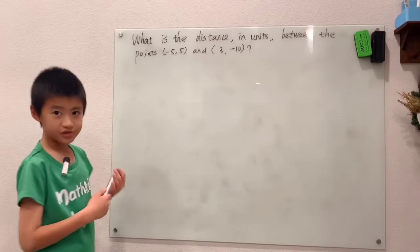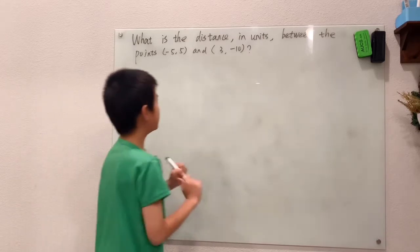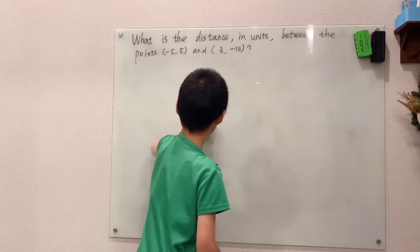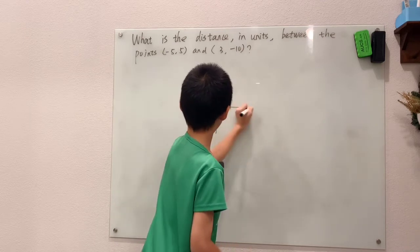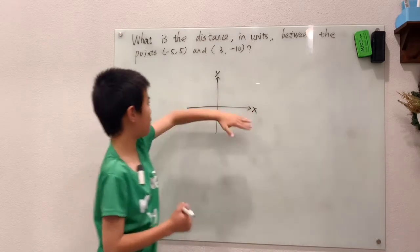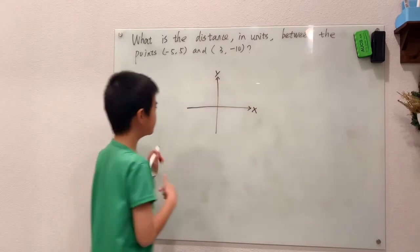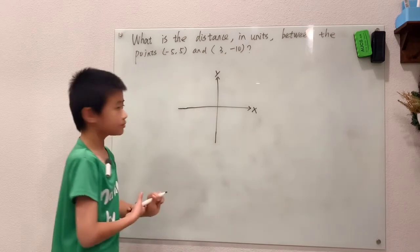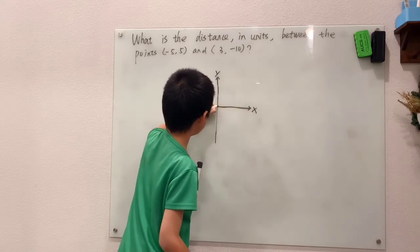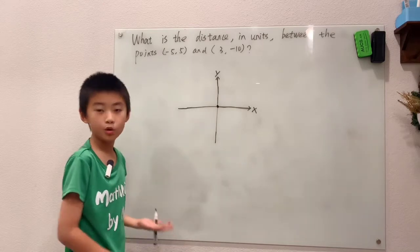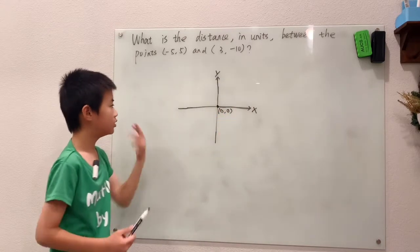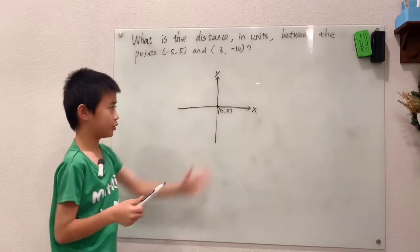What is the distance in units between the points negative five, five and three, negative ten? These two points are on the coordinate plane. These are the y and x coordinates. The point where the x and y coordinates intersect is the origin, which is zero, zero.